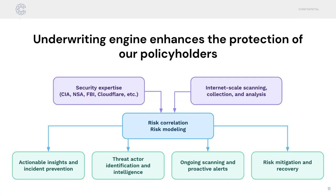Going into this, there are several members on the security team with security expertise. I'm former NSA; there are members on the team that are former CIA, DOD government workers. With the company that Coalition has acquired, Binary Edge, they are actually an internet-scale scanning collection and analysis platform. They scan the entire internet repeatedly throughout the day to gather all the open signals that are out there on the open internet. We ingest all that information along with the security expertise of not only the security team but the data collection team, and that's how we begin to make some of these models and risk assessments.